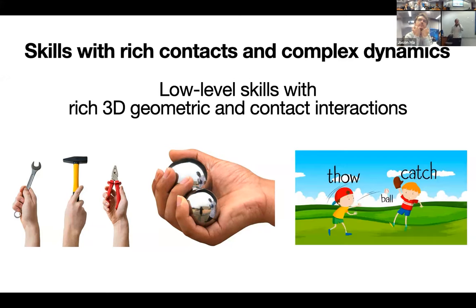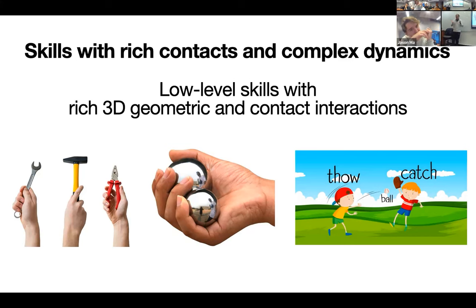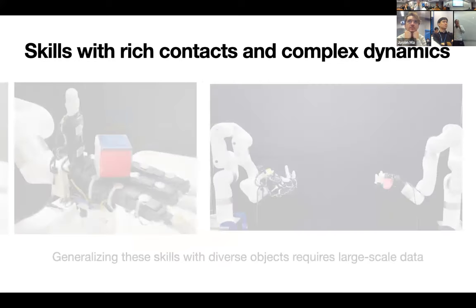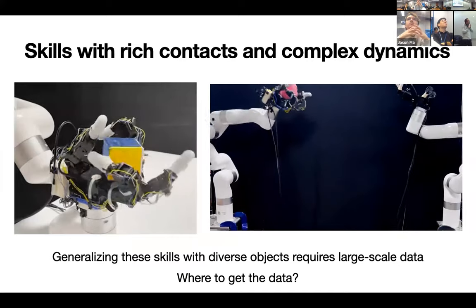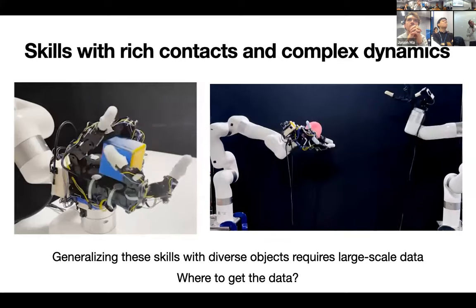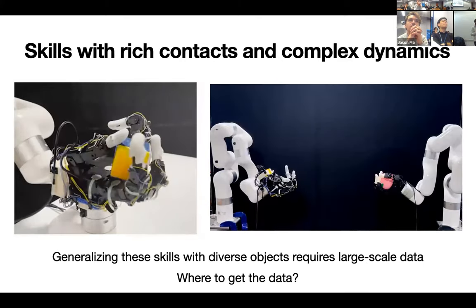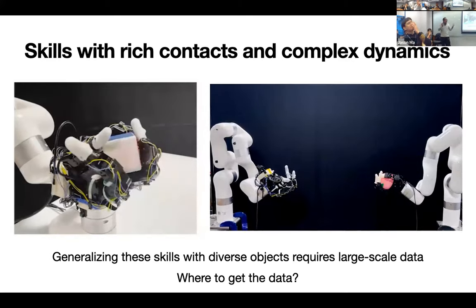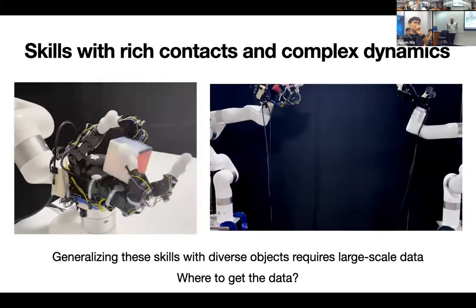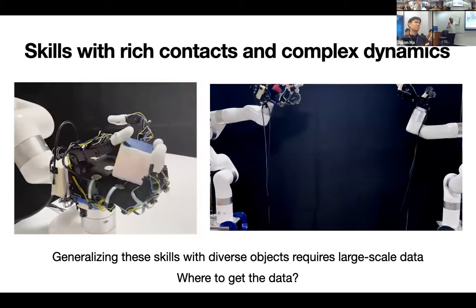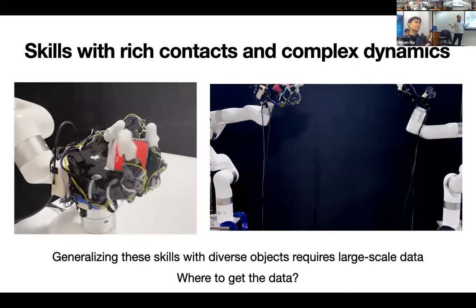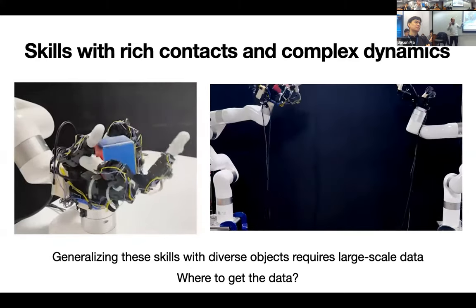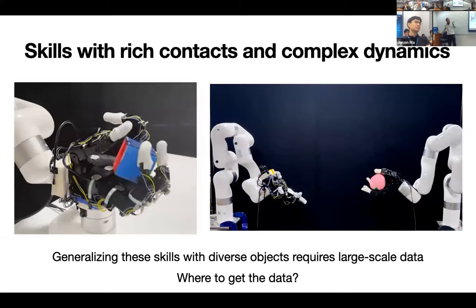Beyond one hand, there's also a very common skill that people do — like throw-and-catch, baseballs and things. We see this a lot in daily life but never see a robot doing it. So the first thing we want to show is enabling the robot to have this kind of skill: manipulating objects in hand, and with two hands doing some throw-and-catch. The key is a single policy that generalizes to many different objects. How do we get large-scale data to train such a policy? That's the central question.